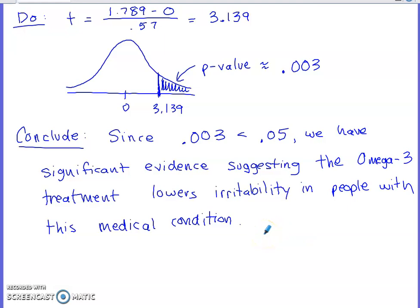we do have significant evidence suggesting that the omega-3 treatment lowers irritability in people with this medical condition. I didn't say lowers it more than taking a placebo. Placebo has no active ingredient, right? So introducing this supplement into your diet, into your daily regimen, if you have this medical condition, does seem like it's going to lower irritability. With your conclusion, it has to be in context. And you want to make sure you use wording that is non-definitive. So my go-to word is always this one. I have evidence from this study suggesting that this is the case. I haven't definitively proven that it is the case. But that is the 2023 FRQ on inference.